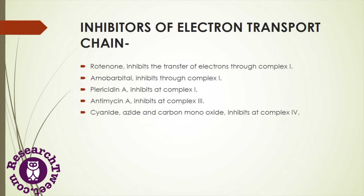Inhibitors of the electron transport chain are molecules that interrupt the transfer of electrons through the complexes. Rotenone, a fish poison and insecticide, inhibits electron transfer through Complex I. Amobarbital also inhibits electron transport through Complex I at the same site.